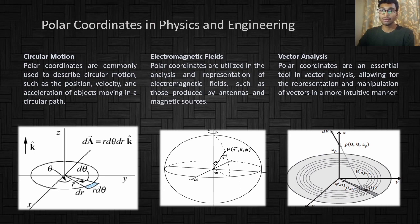In electromagnetic fields, polar coordinates are used in the analysis and representation of electromagnetic fields, such as those produced by antennas and magnetic sources. For vector analysis, polar coordinates are an essential tool, allowing for the representation and manipulation of vectors in a more intuitive manner.